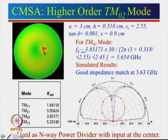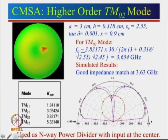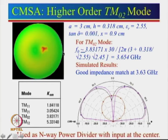This makes TM02 ideal as an n-way power divider. Feed at one point; take outputs at symmetric positions. For a 2-way divider, take outputs at two opposite points. For 4-way, place outputs at 90° intervals. We have used this configuration for a 16-way power divider. In general, for n outputs, place them at angular intervals of 360°/n. For a 10-way divider, each port is at 36°.